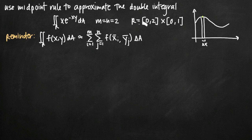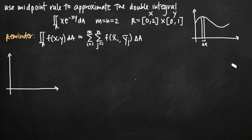To approximate the volume, we first draw the region specified by the rectangle. Whenever you have R equals two intervals like this, it's always the x interval by the y interval. Drawing an xy coordinate plane, we mark 0, 2 on the x-axis and 0, 1 on the y-axis. The x interval goes from 0 to 2, the y interval goes from 0 to 1, and those intervals define the boundary of our rectangle.